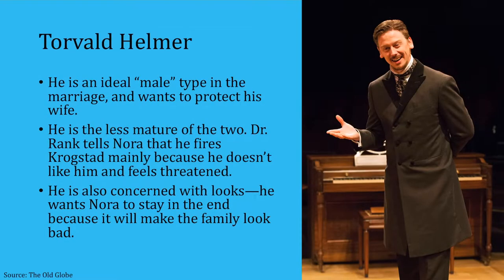Torvald Helmer is the other key character — he's Nora's husband and an ideal male type in the marriage who wants to protect his wife. However, we learn that he's the less mature of the two. Dr. Rank also tells Nora that Torvald fired Krogstad mainly because he doesn't like him and feels threatened by him in the workplace. Torvald is also very concerned with looks and appearances — he wants Nora to stay in the end because a divorce would make the family look bad.